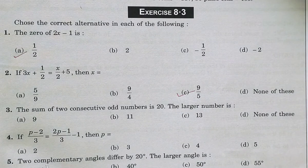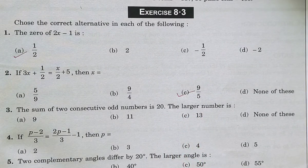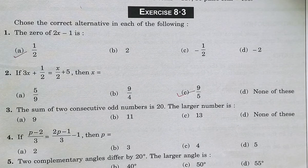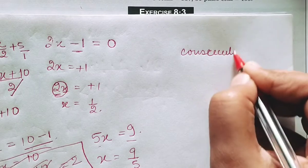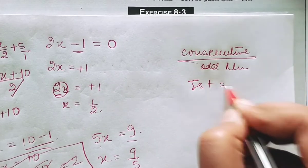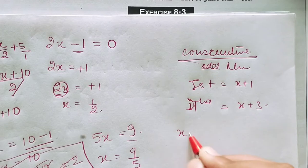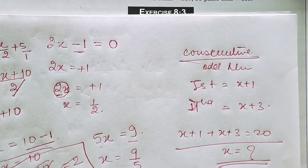Now question number 3: the sum of two consecutive odd numbers is 20; the larger number is? It is saying there are two consecutive odd numbers, so one will be x+1 and the other will be x+3. First number will be x+1 and second number will be x+3, and both their sum is given as 20. So (x+1) + (x+3) = 20. Find the value of x and you will get the answer.